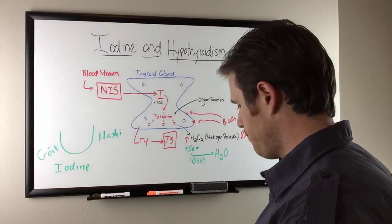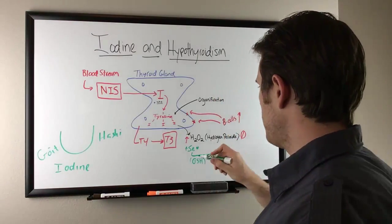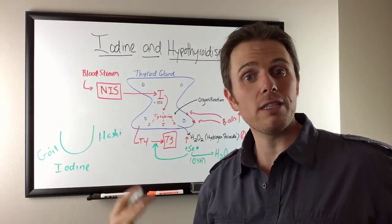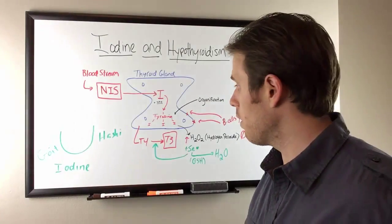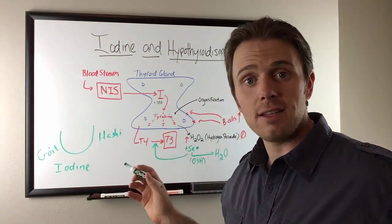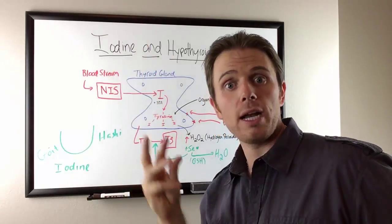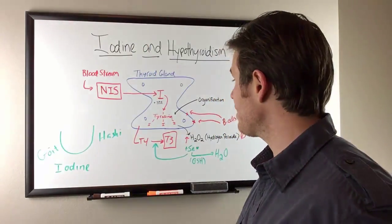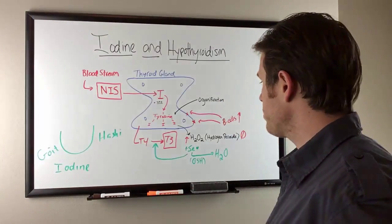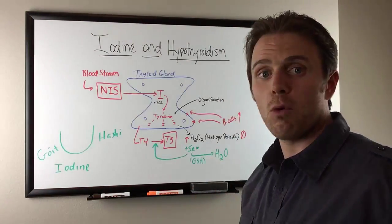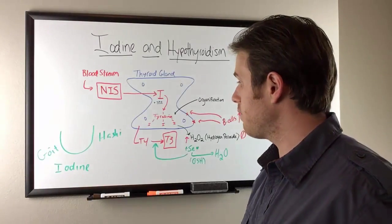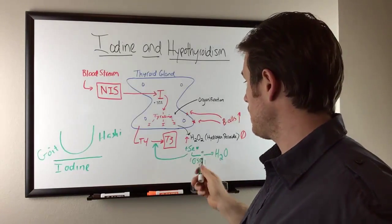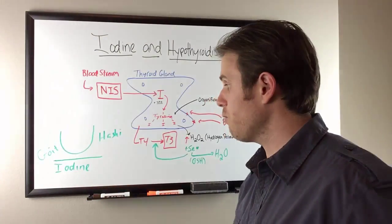Here's the real important part: guess what selenium is also needed for? It's also needed for T4 to T3 conversion. The deiodinase enzyme, deiodinase means deiodine. We're pulling iodines off of the tyrosine molecule. So we need selenium to do that. You can see there's twofold. With selenium deficiencies, we're going to have more hydrogen peroxide with the iodine levels. And without enough iodine or selenium, we're not going to be able to make that T4 to T3 conversion.